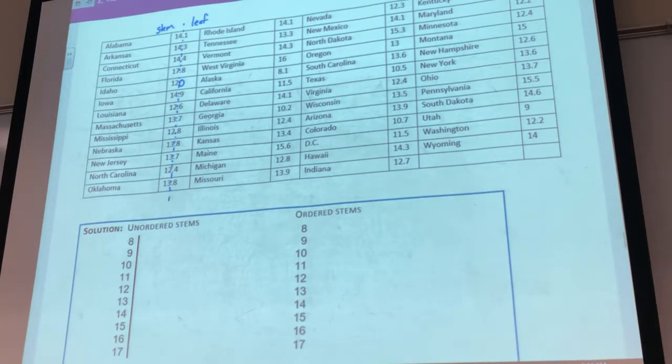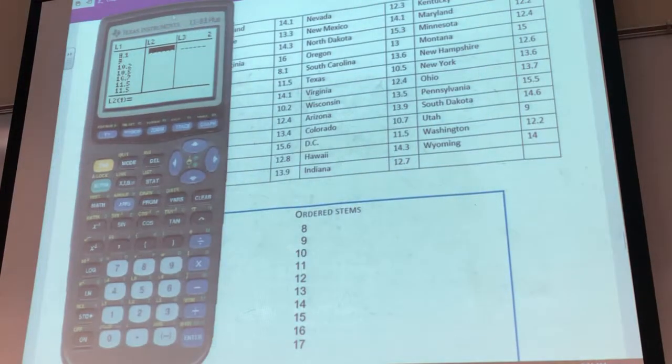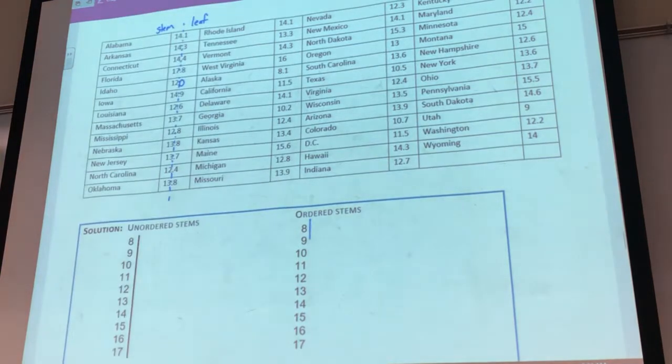So I'm going to put those all down here. So my smallest stem, if you look at your list, is 8. So that's why we started with 8. If we scroll all the way down, it's a 17. So that's why we have to go all the way down here to 17. I'm going to write all of the numbers, even if none of them have any leaves associated with them.